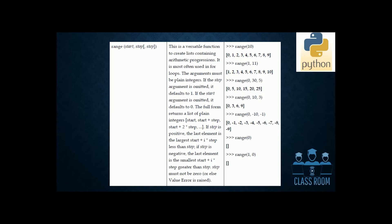The first number is the start. The second number is start plus step. The third number is start plus two times step, etc. We know this as arithmetic progression — the first term is a, and the common difference is the step. The range up to 10 gives 9 numbers, stopping before the stop value.